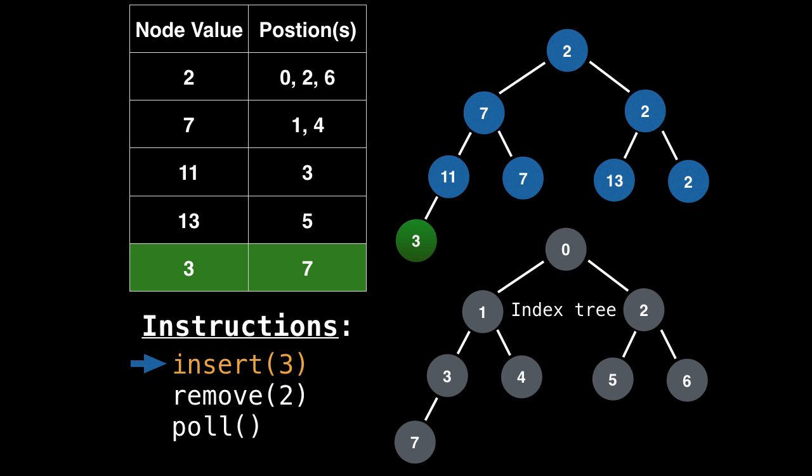So first one, we want to insert three. So we need to place three at the bottom of the heap in the insertion position. We also need to track where the new node is. So we add three to our table, along with its position, which happens to be at index seven. Look at the index tree in gray to confirm this. Now that three has been inserted, we need to make sure the heap invariant is satisfying. Currently, it is not. So what we do is we bubble up three.